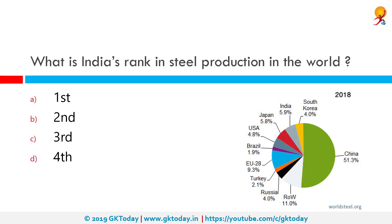What is India's rank in steel production in the world? India's current rank as of 2018 is second. India's crude steel production for 2018 was 106.5 million tonnes, up by 4.9% on 2017, meaning India replaced Japan as the world's second largest steel-producing country.